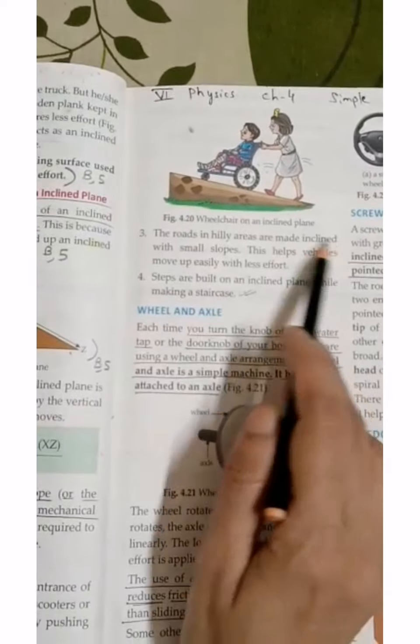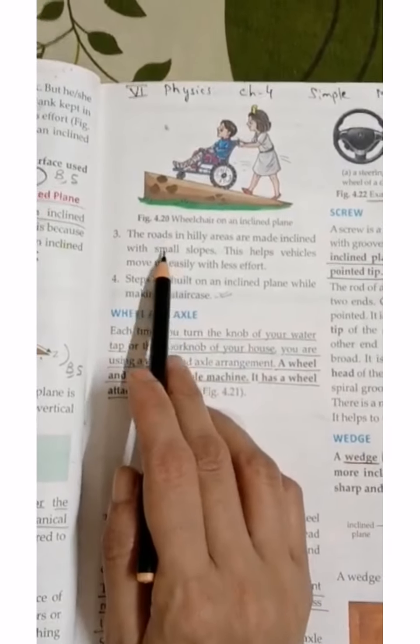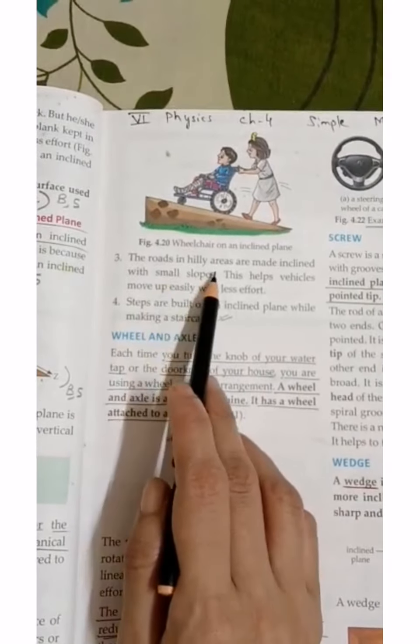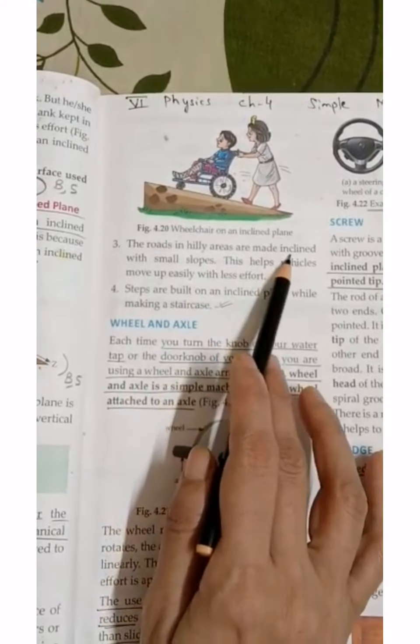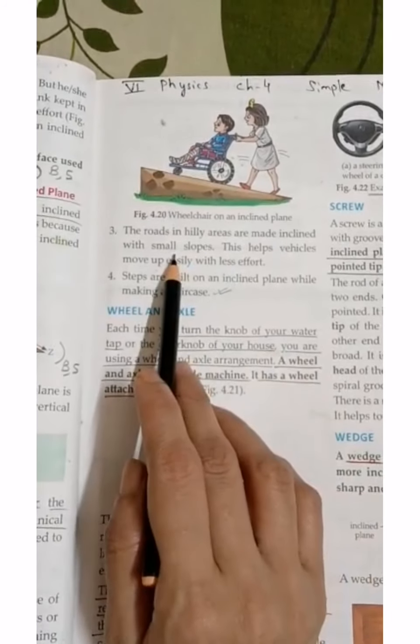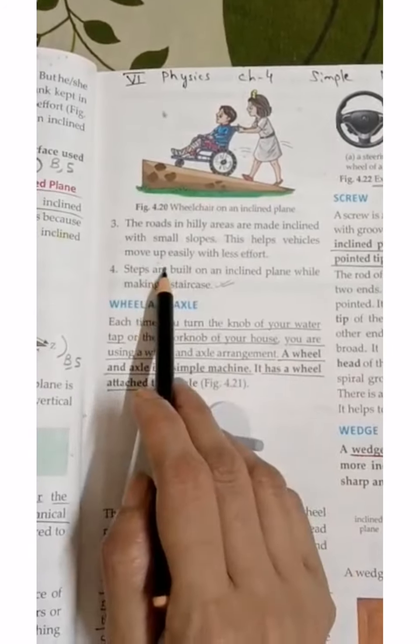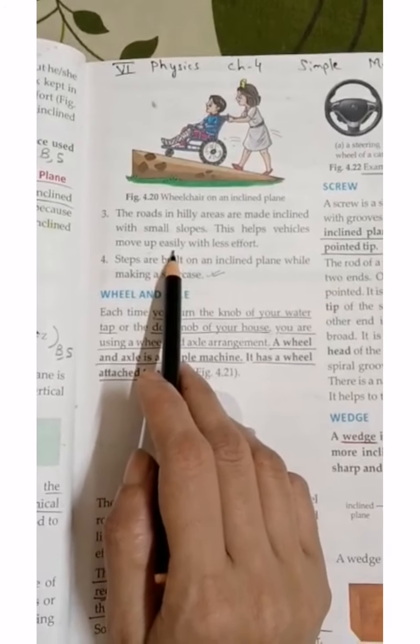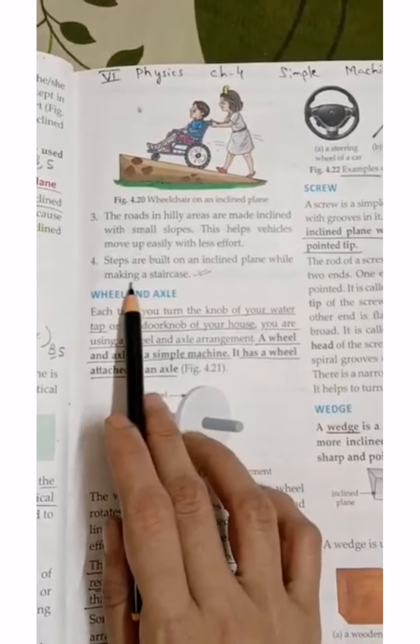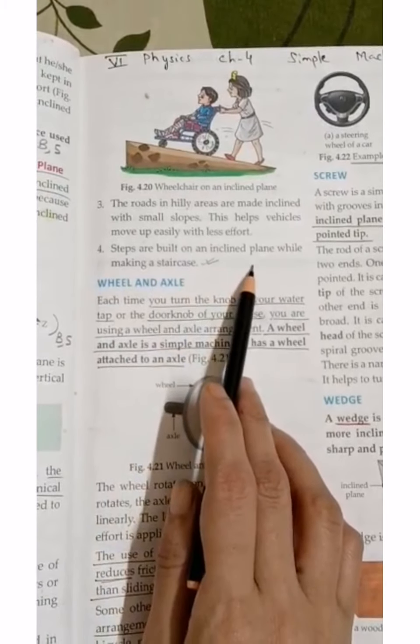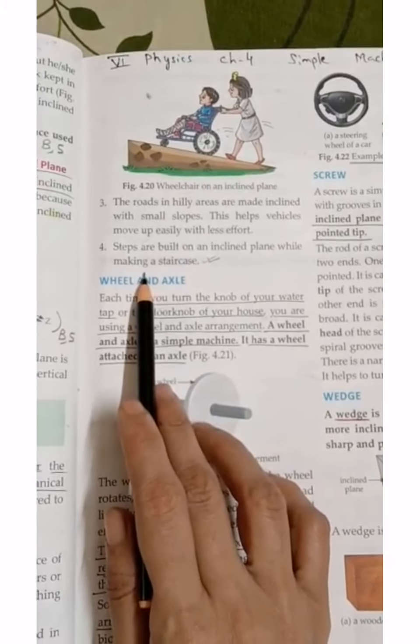Number 3: The roads in hilly areas are inclined with small slopes so that vehicles can move easily with less effort. We build steps on inclined planes so that we can move step by step.